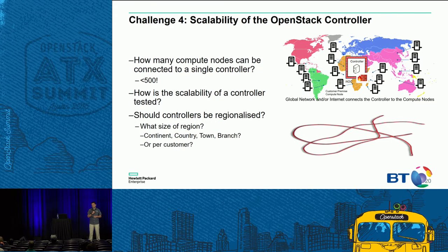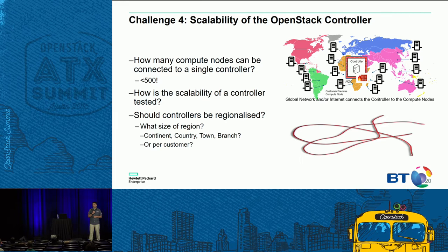The fourth challenge is the scalability of OpenStack. Over every OpenStack summit we find that a single set of controllers is supporting more and more compute nodes — now reaching close to thousands in production deployment, and beyond thousands in test. But even going over that number doesn't meet some of the requirements articulated earlier for distributed NFV, where we potentially need hundreds of thousands of compute nodes.